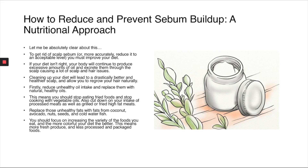One of the best ways to reduce and prevent sebum buildup is to take a nutritional approach. To get rid of scalp sebum, you have to improve your diet. If you have a really bad diet and are suffering with scalp sebum, this will be the most impactful change you can make. If your diet isn't right, your body will continue to produce excessive amounts of oil and excrete them through the scalp, causing scalp and hair issues. Cleaning up your diet can lead to drastically healthier scalp and allow you to regrow hair naturally.